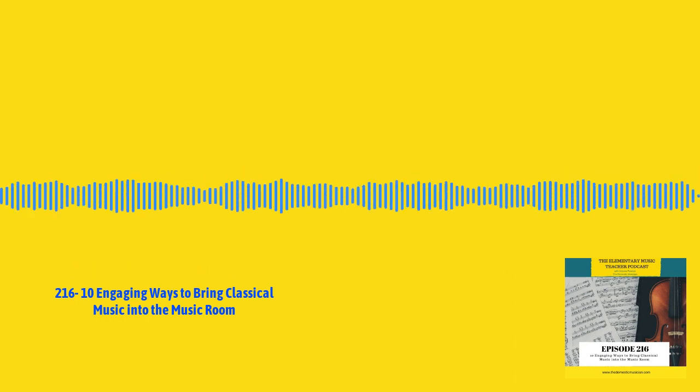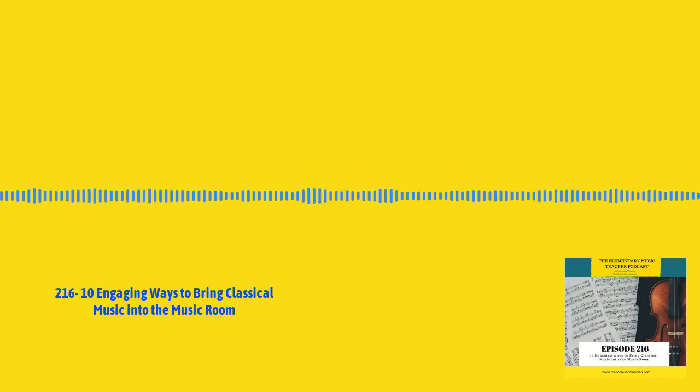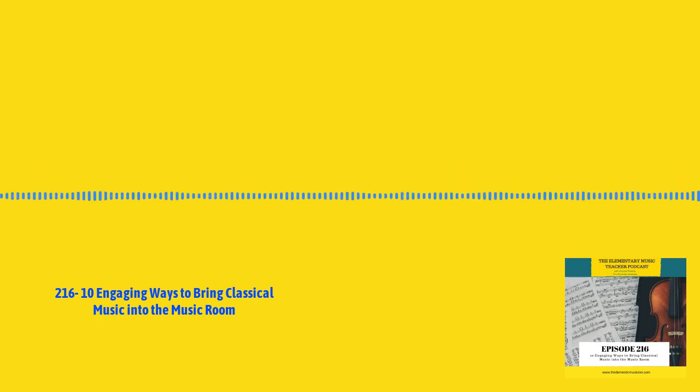There is a website called Black Violin. These are two musicians who play string instruments and talk about their experience learning those instruments, their journey into classical music, and how they play other styles of music on their instruments. It brings music education to students in a relatable way — if you teach students who are Black, they're able to relate to musicians who are Black. It shows students that classical music can be learned by anyone. So number six: show classical student musicians.